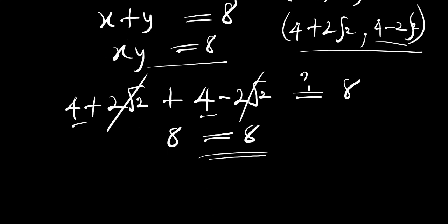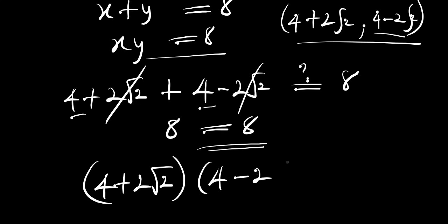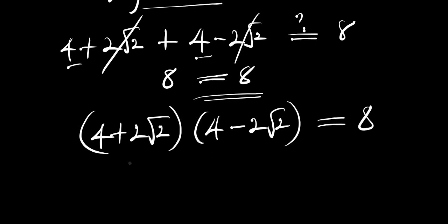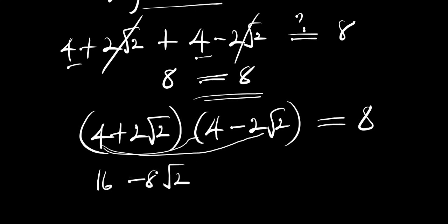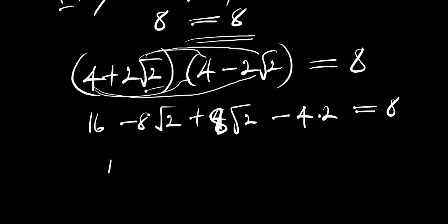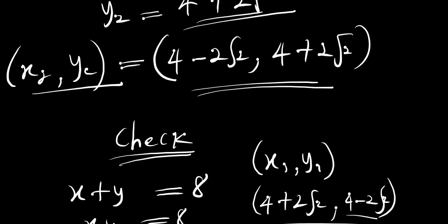Now let's try the multiplication. x times y: we have (4 plus 2 root 2) times (4 minus 2 root 2). Multiplying out: 4 times 4 equals 16; 4 times negative 2 root 2 equals negative 8 root 2; 2 root 2 times 4 equals positive 8 root 2; and 2 root 2 times negative 2 root 2 equals negative 4 times 2 equals negative 8. The root 2 terms cancel, giving 16 minus 8 equals 8. So we have 8 equals 8 — this is satisfied. These are the two answers. Thank you and goodbye.